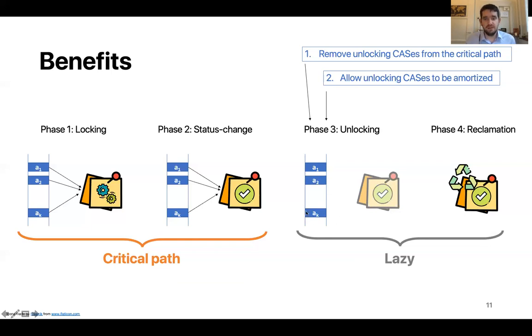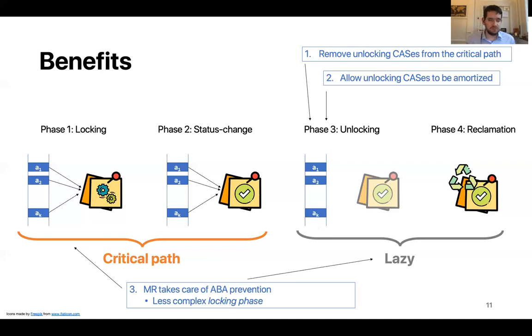A third benefit of our approach, which is also less obvious, is related to ABA prevention. So all MCAS algorithms need to take care of the ABA problem and most of these algorithms do so in the locking phase. So they have extra complexity in place in the locking phase in order to guard against the ABA problem. However, in our algorithm, we allow a memory reclamation scheme to take care of the unlocking phase. And memory reclamation schemes need to guard against the ABA problem in all cases. Therefore, we can benefit from this opportunity and allow the memory reclamation scheme to take care of ABA prevention. And this means that we don't need to perform ABA prevention in the locking phase anymore. So this further allows us to reduce the complexity of the locking phase.